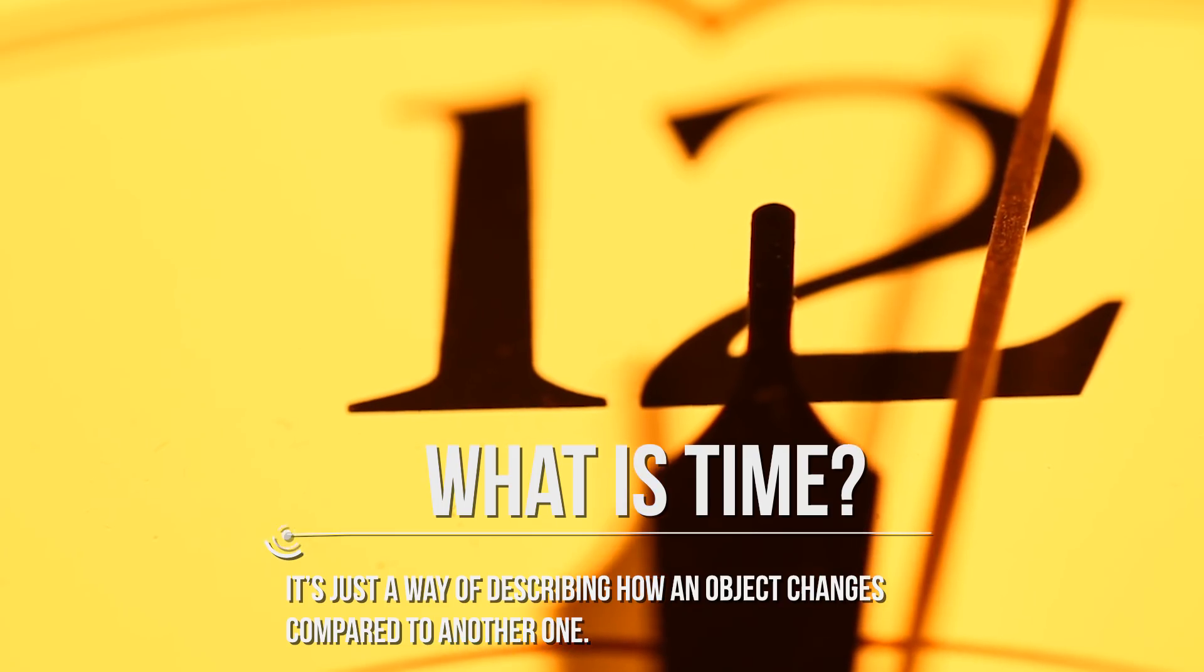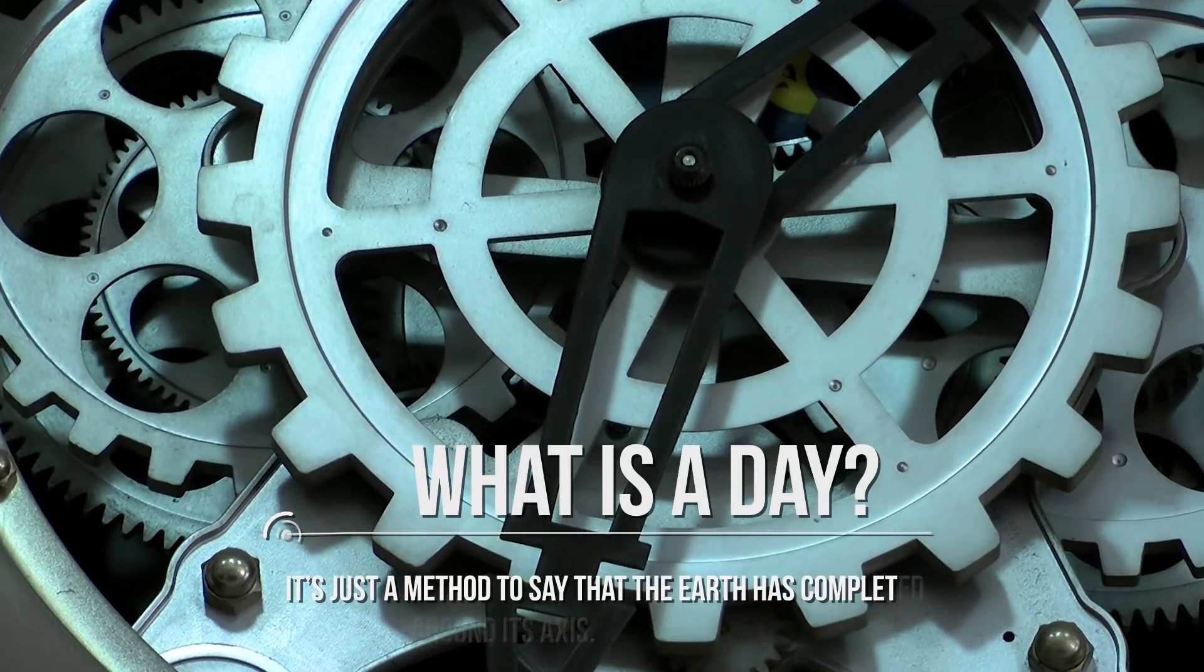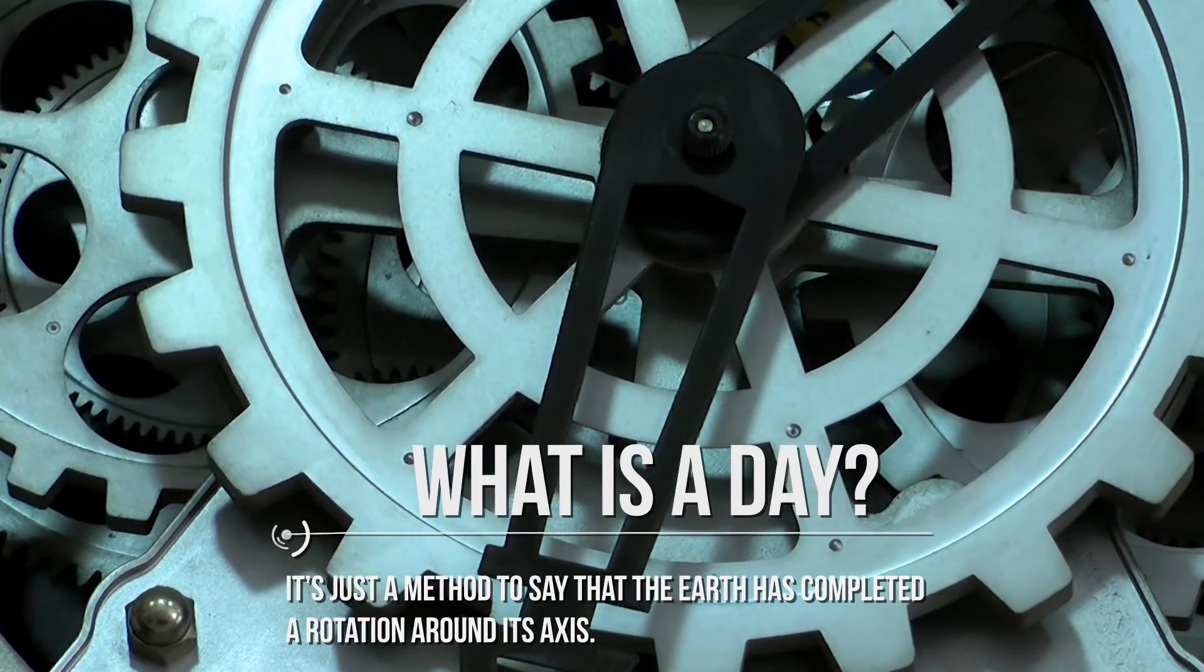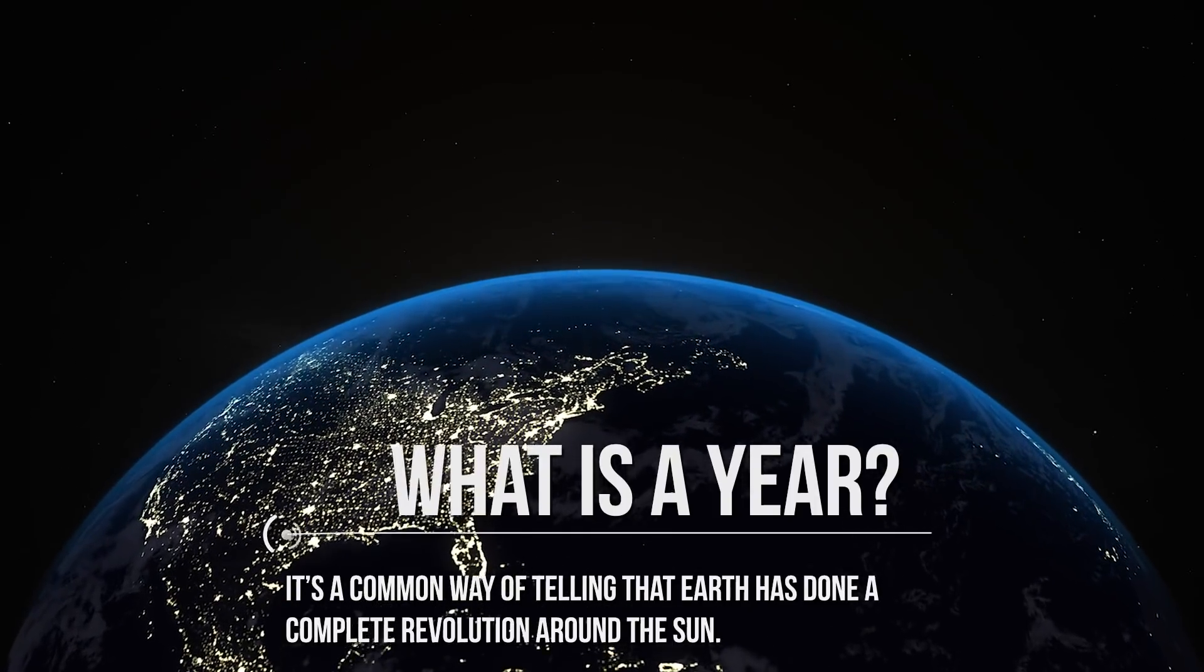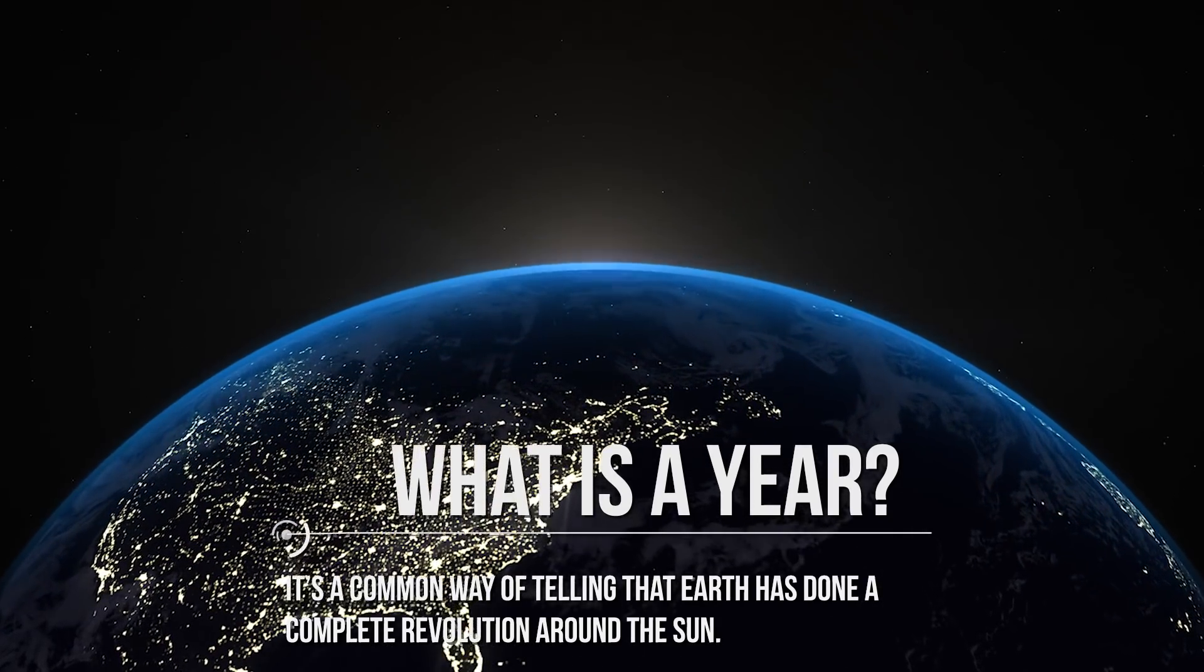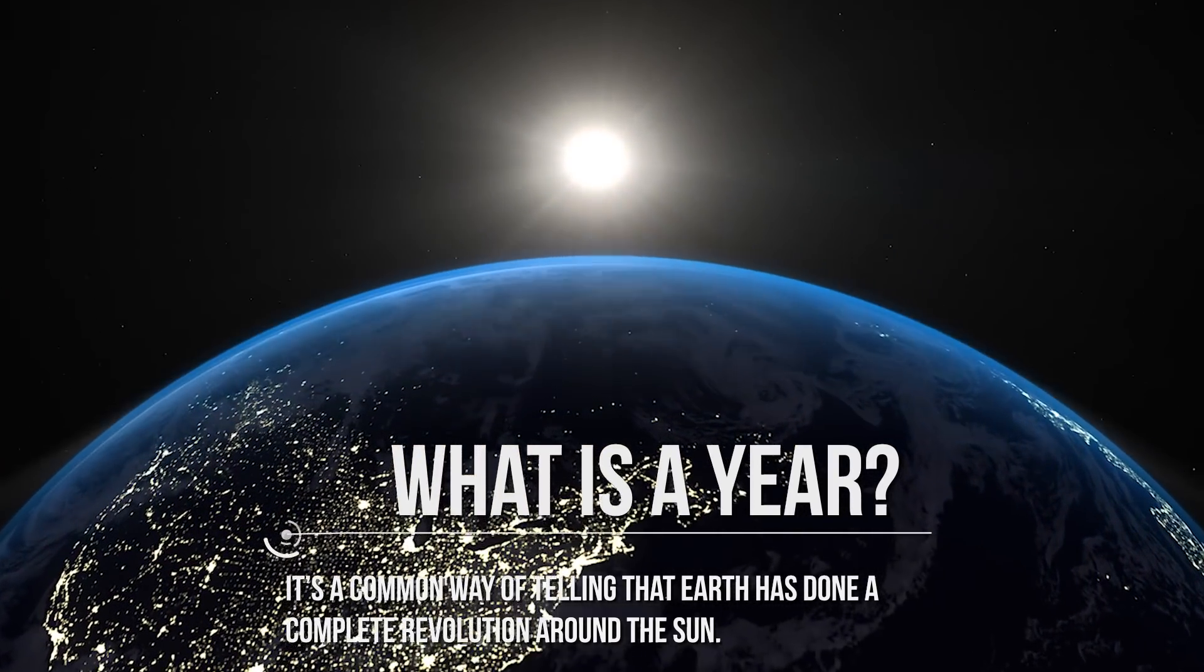Let me give you a pair of examples. What is a day? It's just a method to say that the Earth has completed a rotation around its axis. What is a year? It's a common way of telling that Earth has done a complete revolution around the Sun.